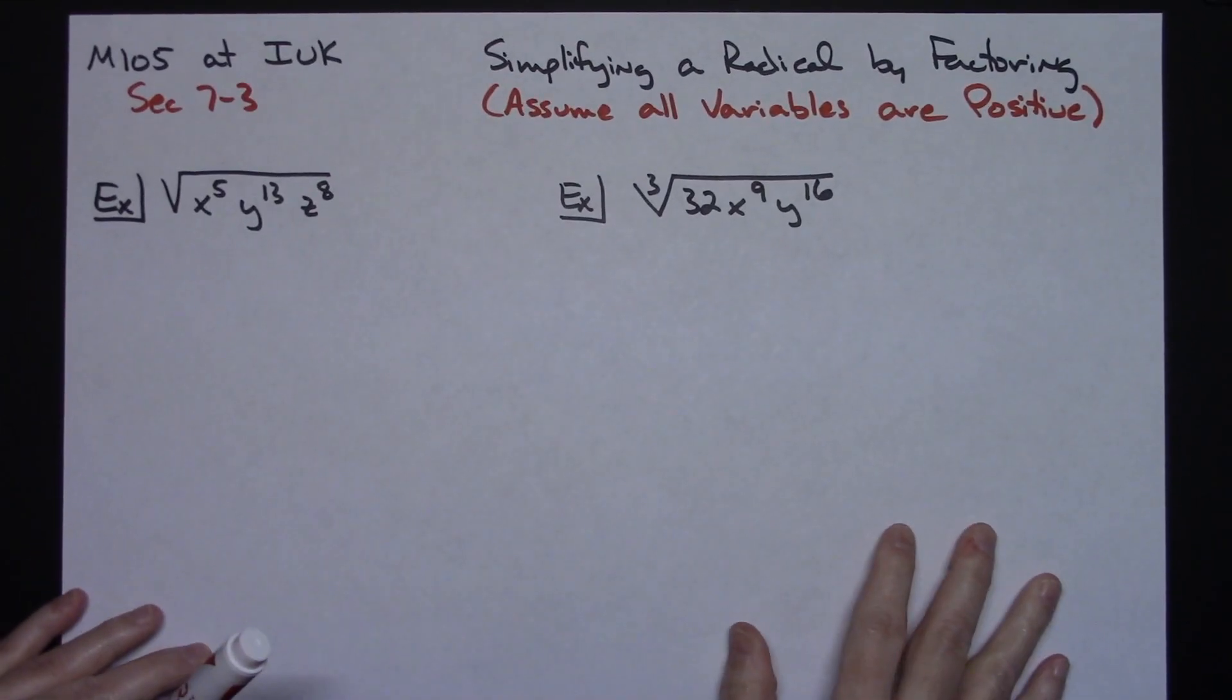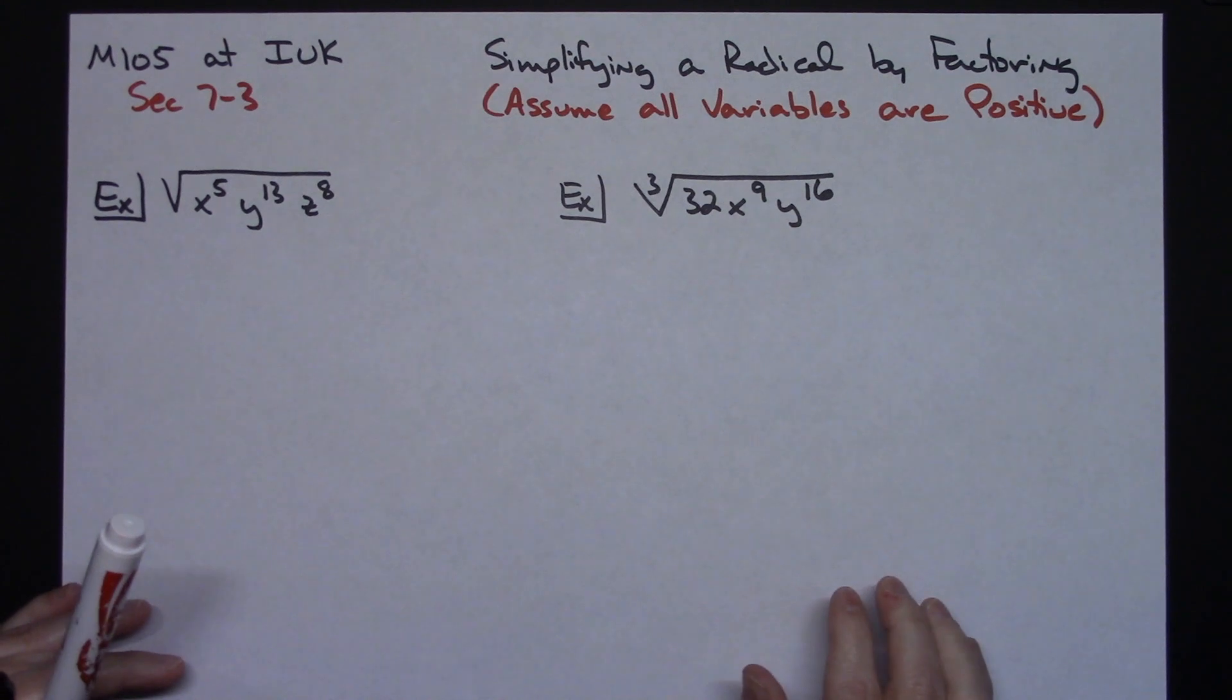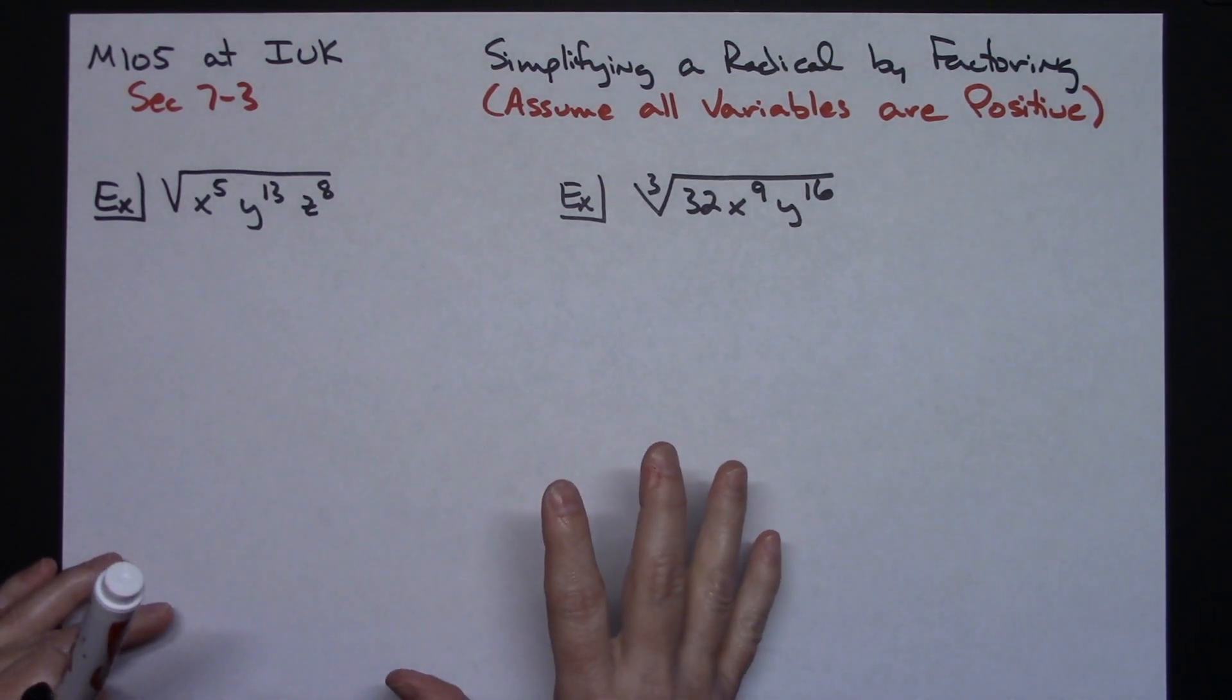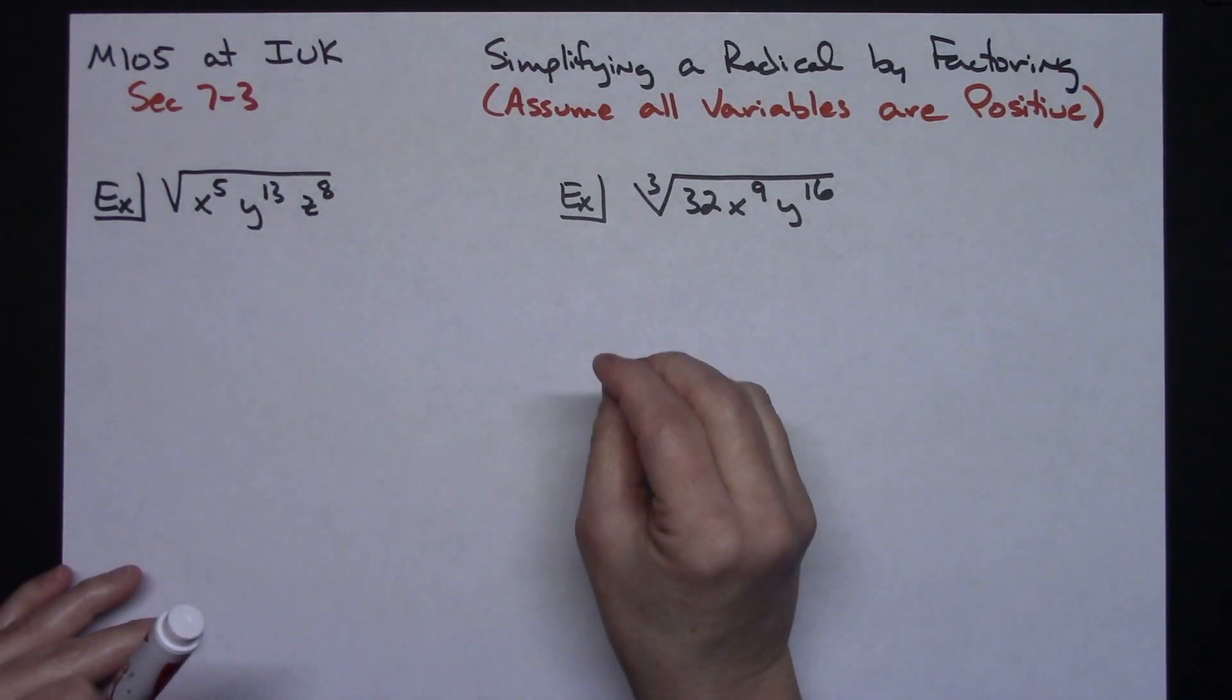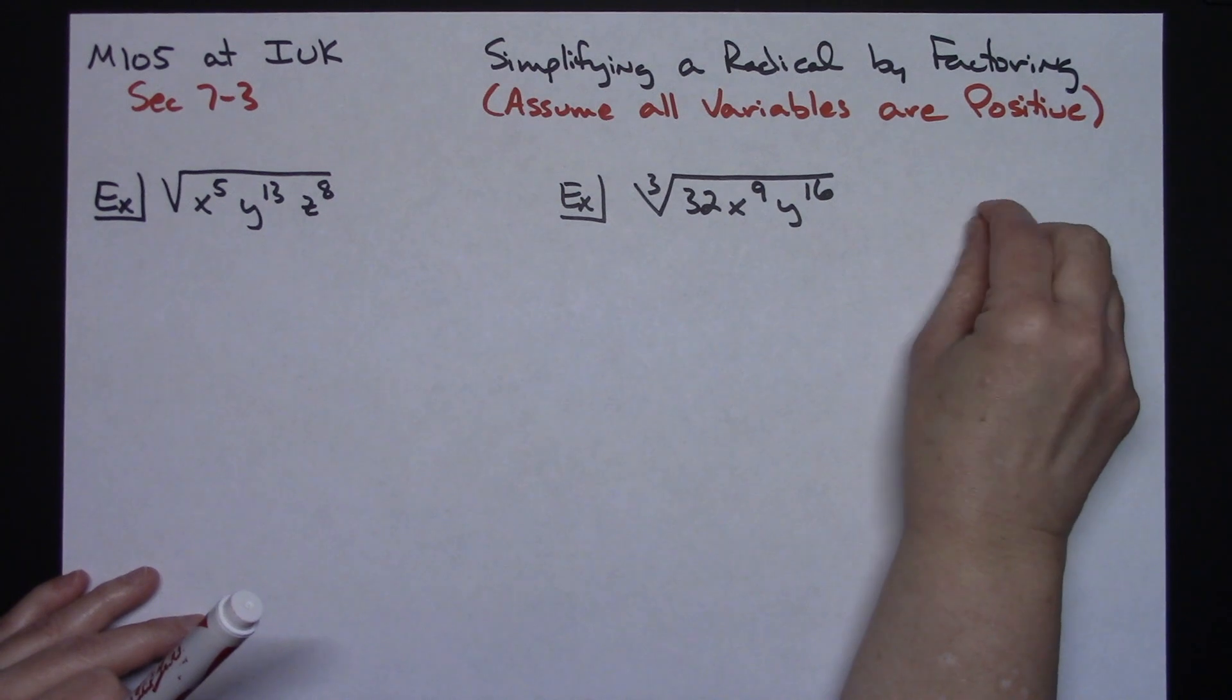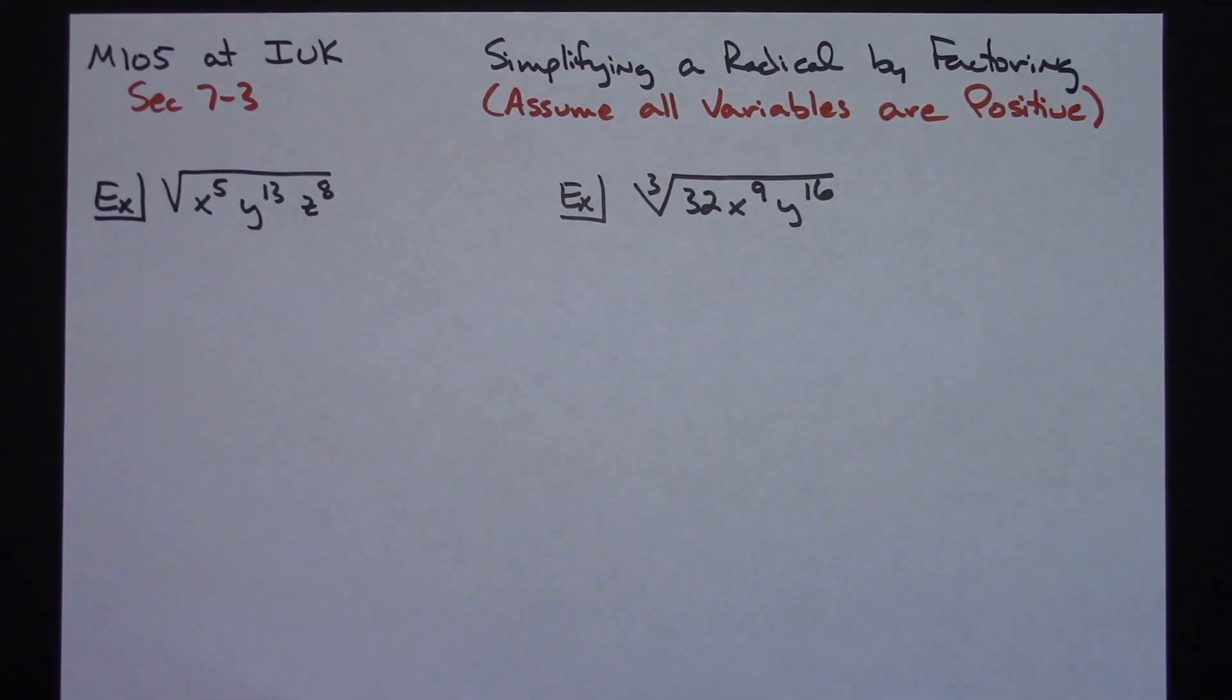In this video I'm making it specifically for M105 at IUK. It is examples from section 7-3. This is going to be a couple of examples simplifying a radical by factoring. We are going to assume that all variables are positive, so therefore we will not be using any absolute value bars at this point.